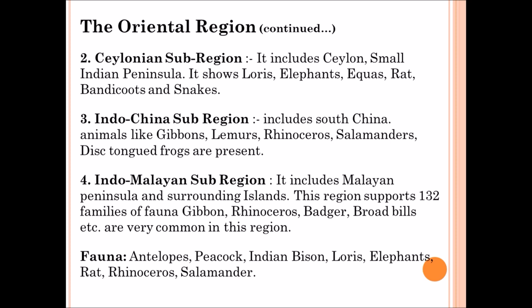The second sub-region is the Ceylonian sub-region. It includes Ceylon and the small Indian peninsula, showing Loris, elephant, Equus, rat, bandicoots, and snakes. The third sub-region is the Indochina sub-region, which includes South China. Animals like gibbons, lemur, rhinoceros, and salamanders are present. The fourth sub-region is the Indo-Malayan sub-region, including Malayan and surrounding islands, containing 132 families of fauna like gibbon, rhinoceros, and broadbills. In the Oriental region overall, antelopes, peacock, Indian bison, Loris, elephant, rat, rhinoceros, and salamanders are present.